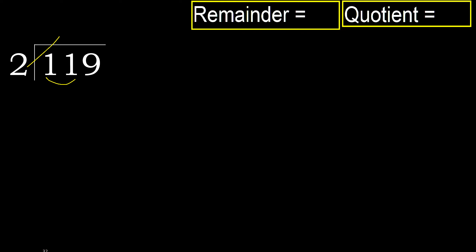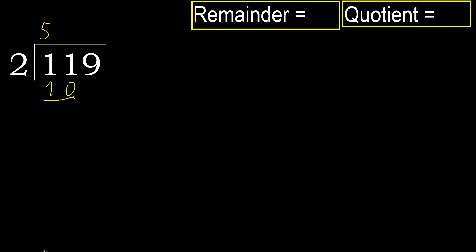2 multiplied by which number is nearest to 11 but not greater? 2 multiplied by 6 is 12, which is greater. Multiply by 5: 10, which is not greater. 11 minus 10 is 1.